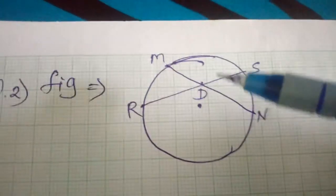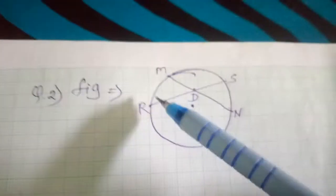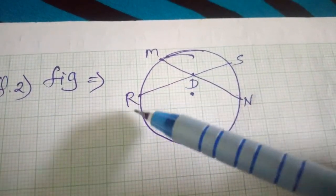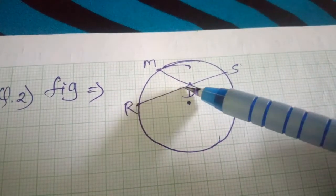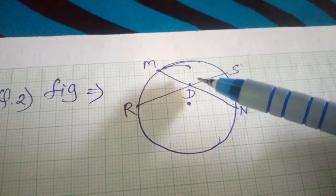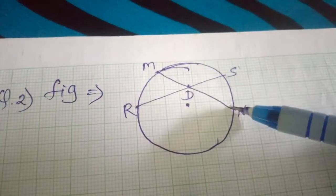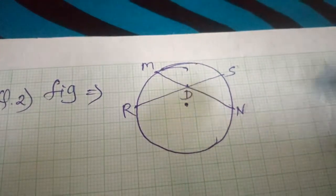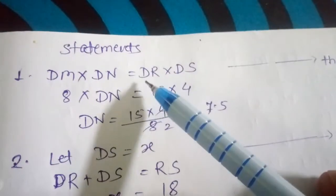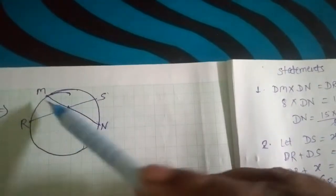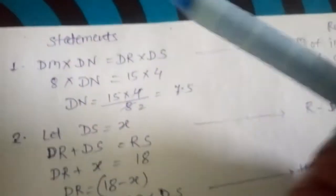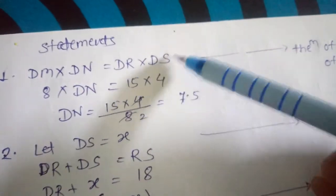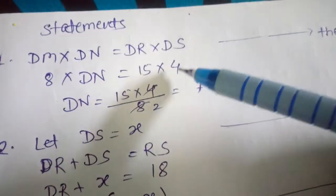We apply the theorem of internal division of chords: DM × DN = DR × DS. For the first part, DM = 8, DR = 15, DS = 4. So DN = (15 × 4) ÷ 8 = 60 ÷ 8 = 7.5.